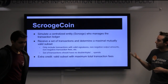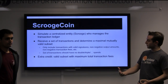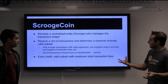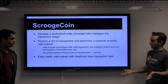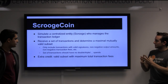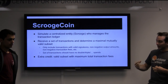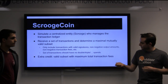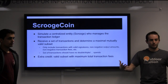The first assignment was called Scroogecoin, based on a model we saw in class. Before getting to Bitcoin, we saw an introductory model called Scroogecoin, in which instead of a decentralized network verifying payments, there's a centralized entity called Scrooge who manages the transaction ledger. Scrooge verifies transactions and decides which ones to include. The project was to implement a function that receives a set of transactions and determines a maximal mutually valid subset. Each transaction in the subset has to be valid in itself: all signatures must be valid, output amounts must be non-negative, and the transaction fee must be non-negative — the sum of output amounts must be at most the sum of input amounts.